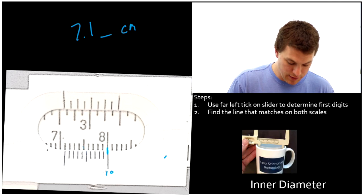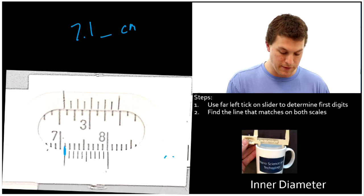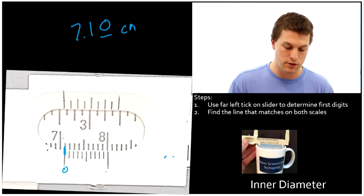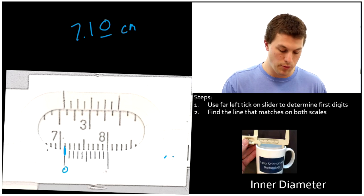That means I'm going to take this leftmost tick that lines up directly. So it's my very first tick, 0, that lines up. And that's going to give me 7.10 centimeters for the inner diameter of my coffee mug. One more example.